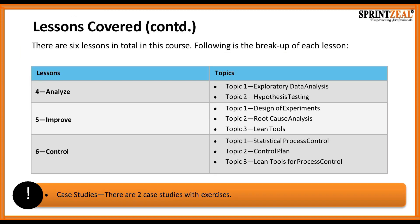In the Analyze phase, we're going to look at exploratory data analysis and hypothesis testing. Moving into the Improve phase, we'll look at design of experiments, root cause analysis, and more in-depth Lean tools. The final phase of DMAIC is Control, where we'll look at statistical process control, control plans, and Lean tools to ensure process control.